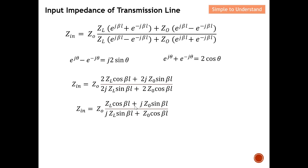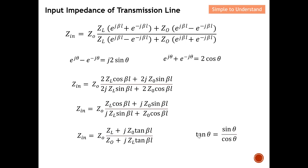Dividing numerator and denominator by cos(βl), the cosine terms become one and sine over cosine becomes tangent. Therefore the input impedance of the transmission line is Z_in equals Z₀ times (Z_L + j·Z₀·tan(βl)) over (Z₀ + j·Z_L·tan(βl)). With this result, I'd like to end the discussion. Please like and subscribe — thank you so much for your strong support. I hope to see you soon, bye for now.